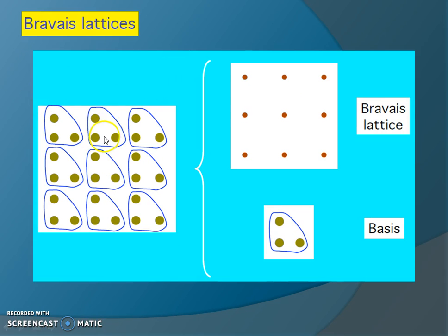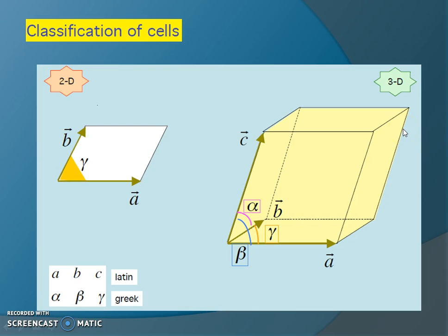The Bravais lattice is distributed over lattice points with defined angles. The basic parameters are the translational vectors A, B, C and the interfacial angles alpha, beta, and gamma. The angle between A and C is beta, between B and C is alpha, and between B and A is gamma. These translational vectors A, B, C lie in three directions X, Y, Z, and the interfacial angles alpha, beta, gamma are defined between pairs of vectors.